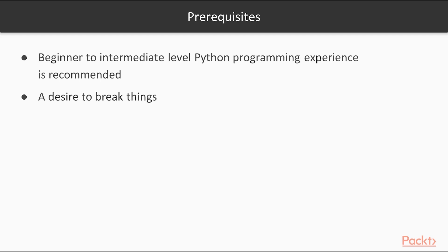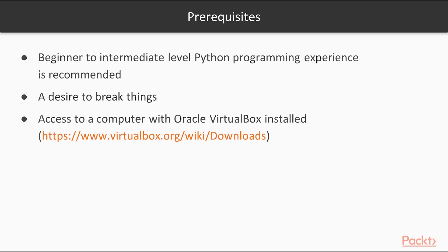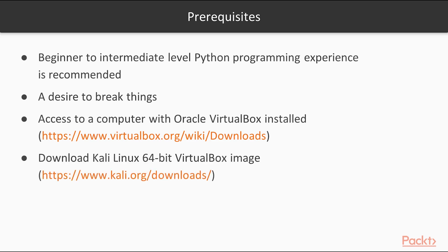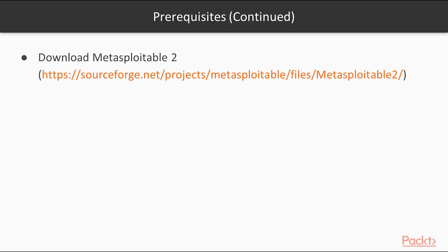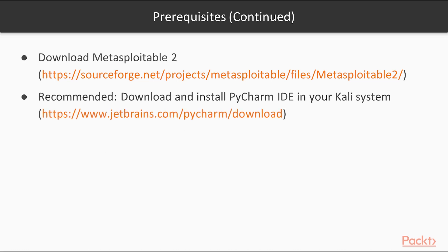It's going to be very important that you want to break things, because some of the modules in this course are focused around penetration testing and automating that, and you have to want to break security if you're going to do penetration testing. We're going to need Oracle VirtualBox installed on your machine. You're going to download Kali Linux as your testing machine to launch exploits from, download Metasploitable 2 to run tests against, and I also recommend installing the PyCharm IDE on your Kali system — it's not necessary, but I personally find it very helpful.